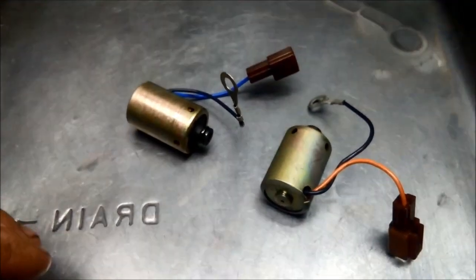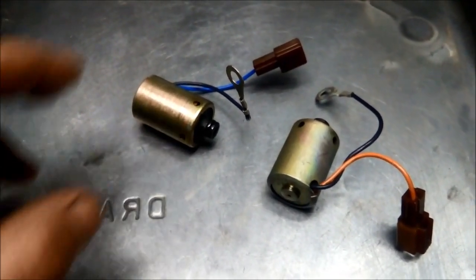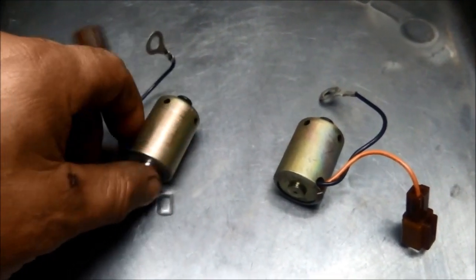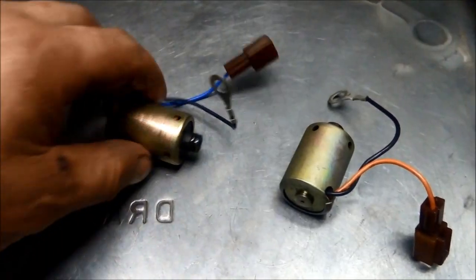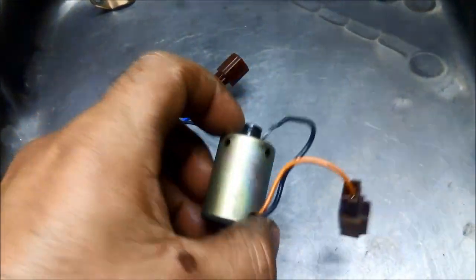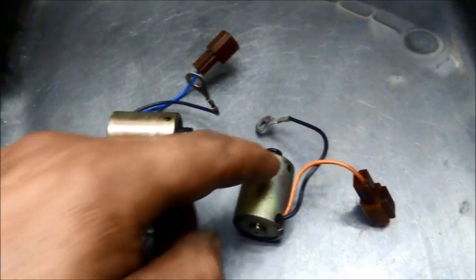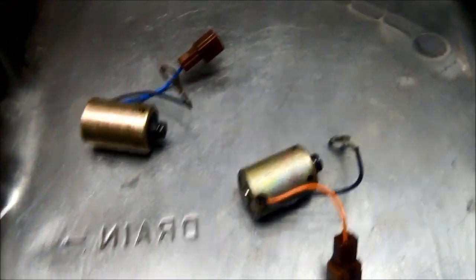Okay, we've got a quick video of how we're testing two different types of solenoids. These are Rostra solenoids out of an A340 transmission. We've got a shift solenoid here, which is basically an on-off solenoid, and we've got the torque converter clutch solenoid.